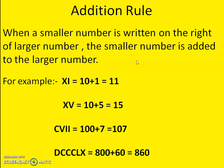Let's see the addition rules. Whenever the smaller number is written after the larger number, you add. For example, XI means 10 plus 1, which is 11. Then XV means 10 plus 5, which is 15. Then CVII: C is 100, V is 5, and II is 2, so 100 plus 7 equals 107, represented as CVII in Roman numerals.